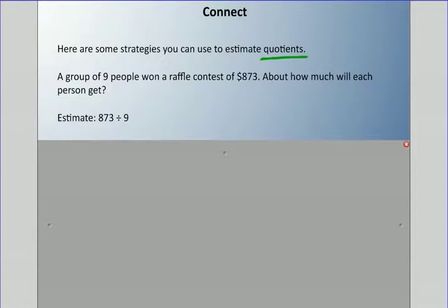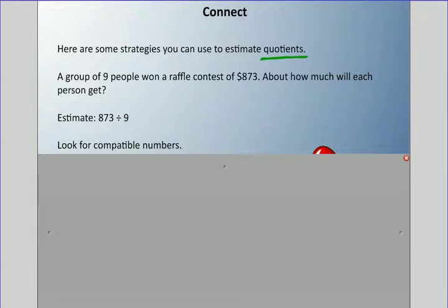Let's say a group of nine people won a raffle contest of $873. About how much will each person get? So we're going to estimate 873 divided by 9. We're going to use something called compatible numbers. We've talked about compatible numbers with multiplication, but we can do the same thing for division.